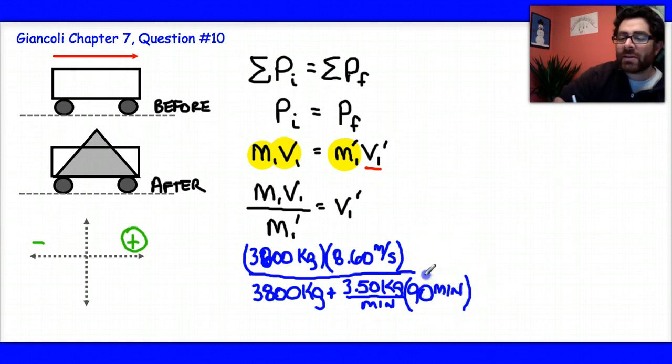So in the denominator of this fraction here, unit-wise, we'll see that the minutes cancel out, and I'll be left with 3,800 kg plus 3.5 kg times 90. And all of that, of course, is going to be equal to the velocity of the railroad car after the collision.